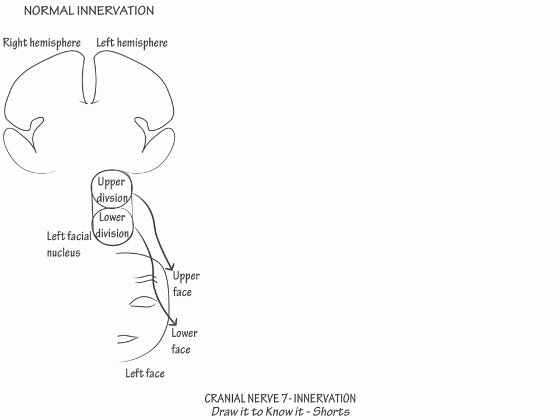Show that the upper division receives bilateral corticonuclear projections and that the lower division receives contralateral projections only. This difference is highly clinically important, as we will see in the following two case vignettes.